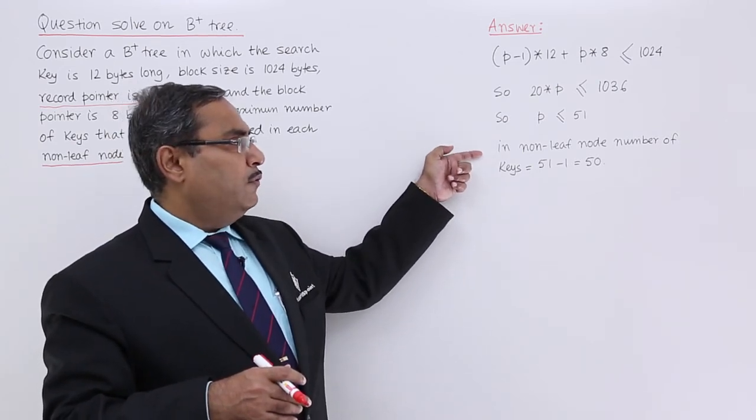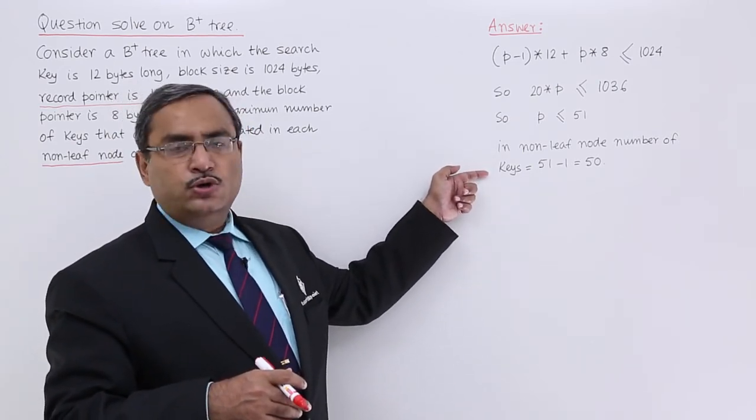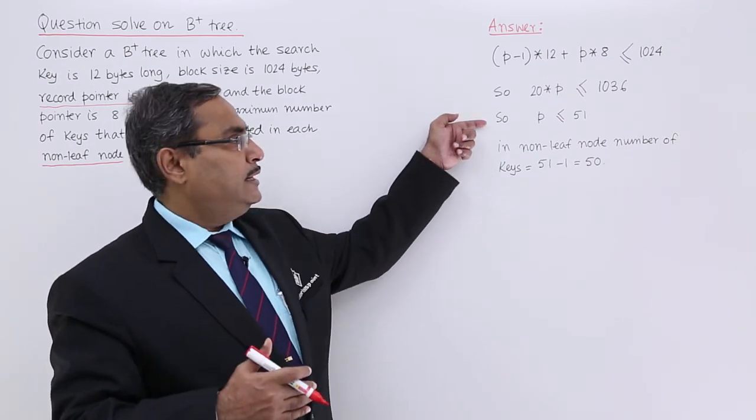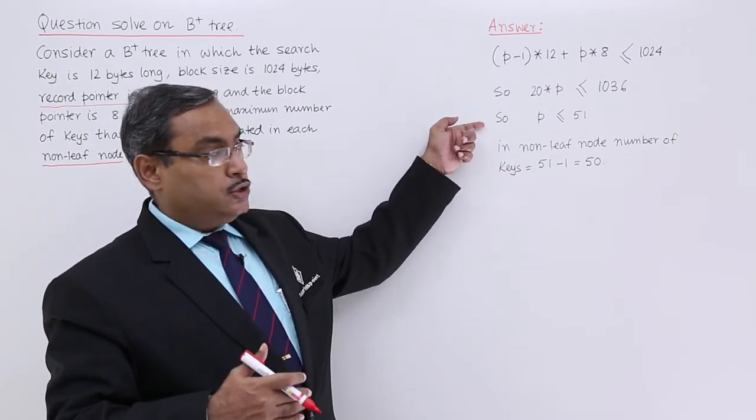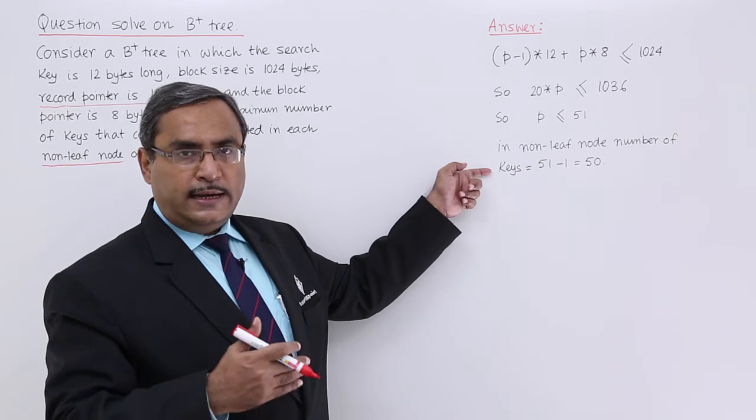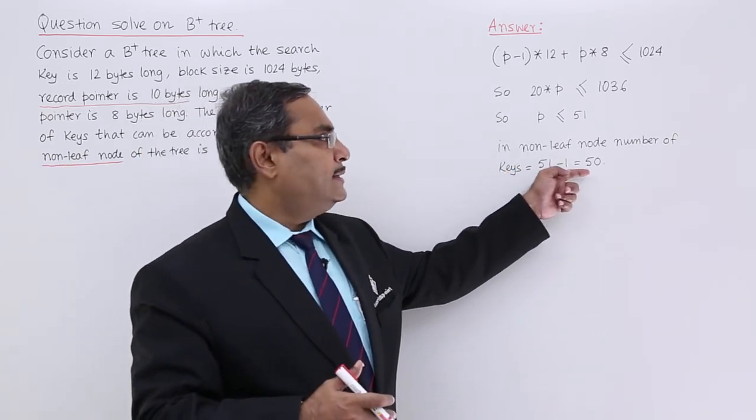So in non-leaf nodes, the number of keys will be 1 less than that, because it is the pointer count. So 1 less than that will be the key count, so answer will be 50.